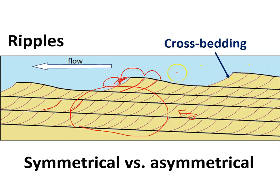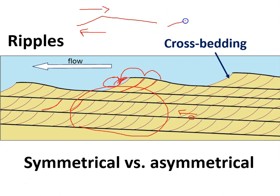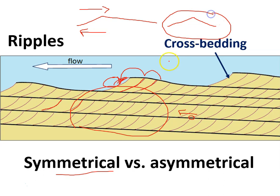Now in this case, you can see that the crossbeds have an asymmetrical shape — they're shaped differently on one side than the other, steeper on the side of the movement. On the other hand, if the direction was changing back and forth, the result is going to be one which is equal on both sides, or symmetrical. And so even the shape of the ripple itself is going to tell you something about the environment where they were deposited.